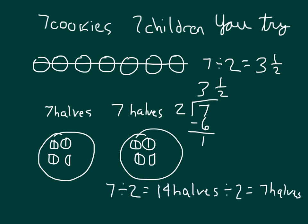And this here is an equation that I could write out. Seven divided by two equals 14 halves. That's the total amount of halves that I had, divided into two parts, where it is that each of those people would receive seven halves.